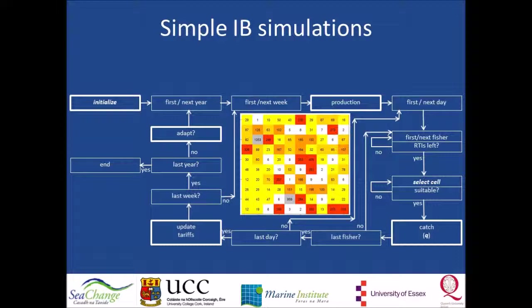The fictive population is distributed over 100 cells, and these cells have color-coded tariffs in RTIs per day. Simulations run through days, within weeks, within years. Each day, each of 100 fishers fishes according to a simulation scenario, provided that he has RTIs left.